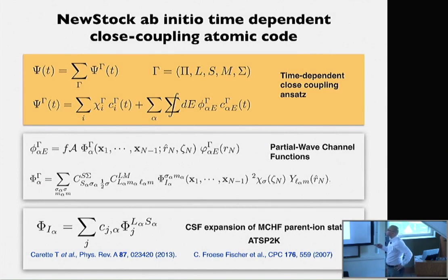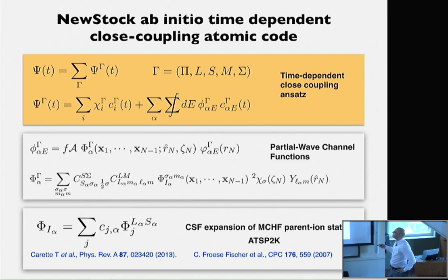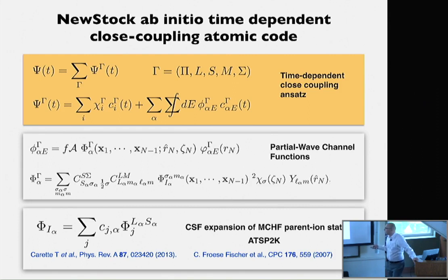As you have seen several times, we use a time-dependent close coupling approach. We expand the wave function for the system in terms of symmetry-adapted wave functions. Each symmetry-adapted wave function has an expansion of some pseudo-channel localized states, plus an expansion on close coupling ionization channels. Each close coupling channel has a parent ion coupled to the angular and spin part of the photoelectron, and the radial part where the photoelectron is described with a B-spline or FEDVR basis — in our case, B-splines. The parent ions are treated at the level of multi-configuration Hartree-Fock using the ATSP2K code by Biero-Froese Fischer.